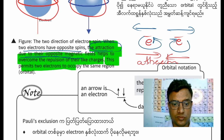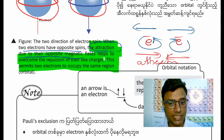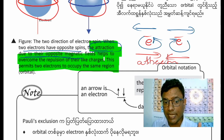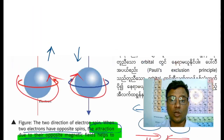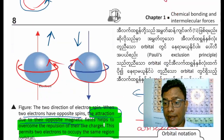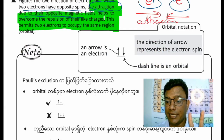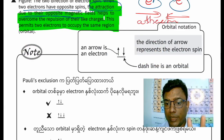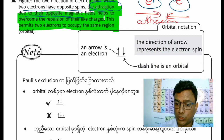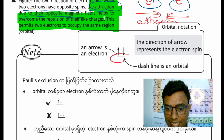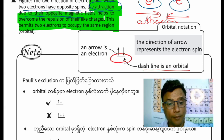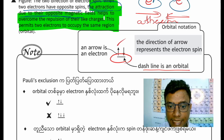This permits two electrons to occupy the same orbital. This is orbital notation. The first line represents an orbital, and an arrow represents an electron placed in that orbital.